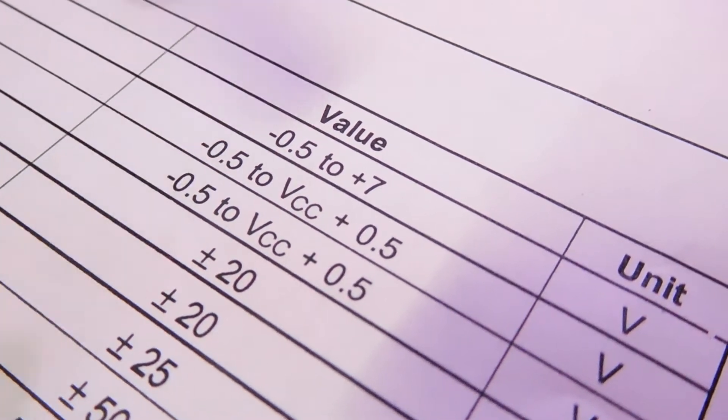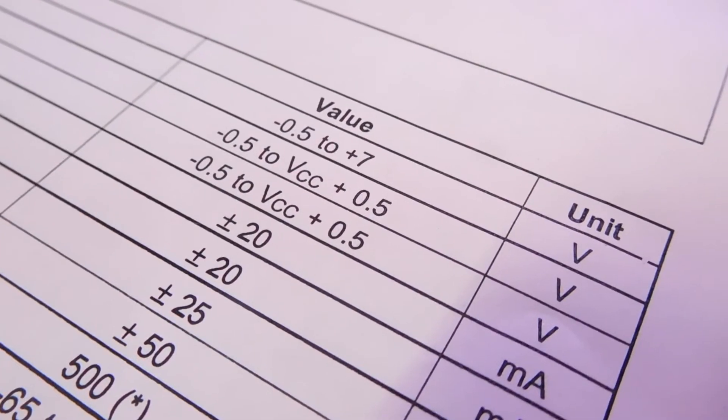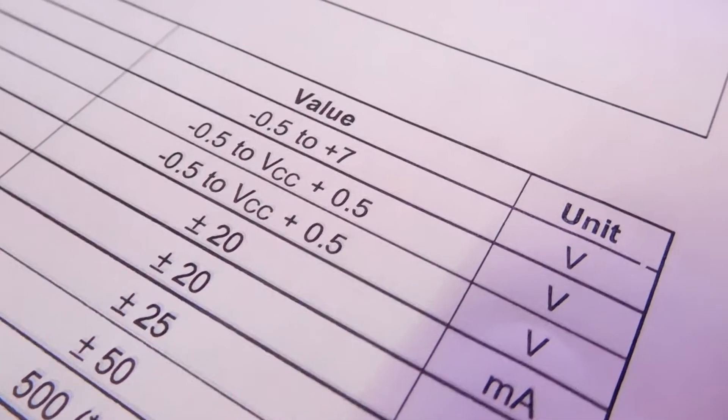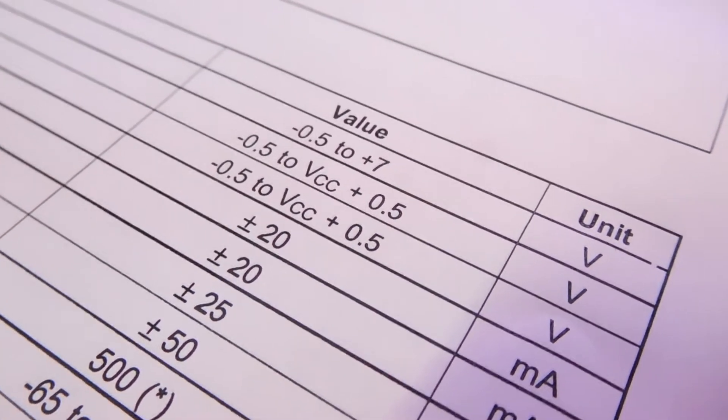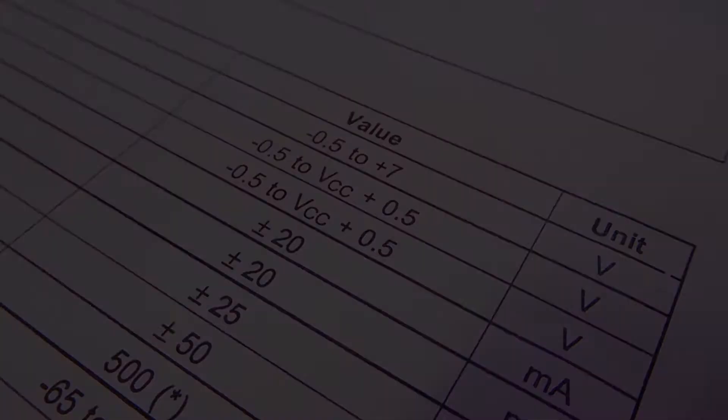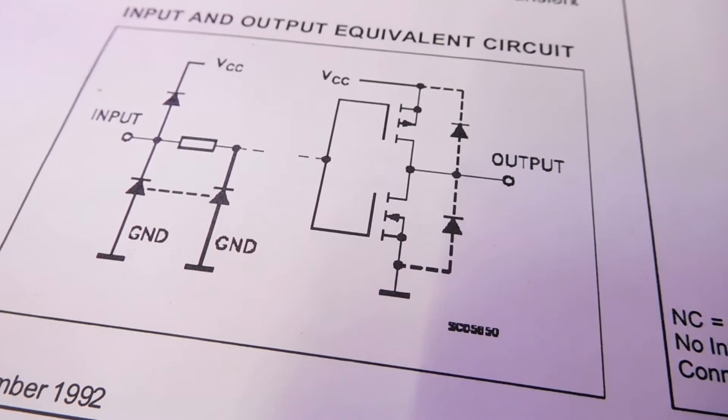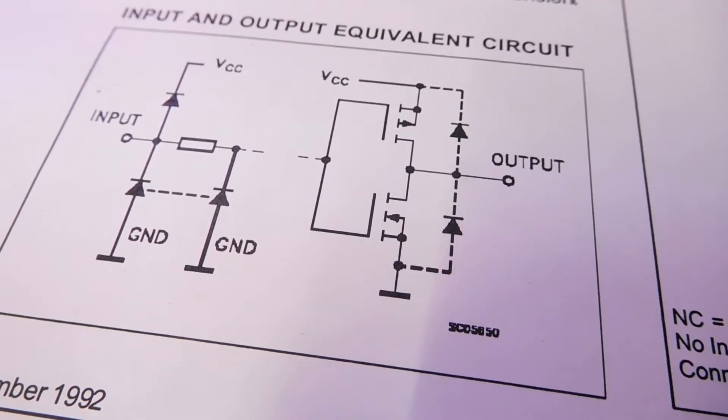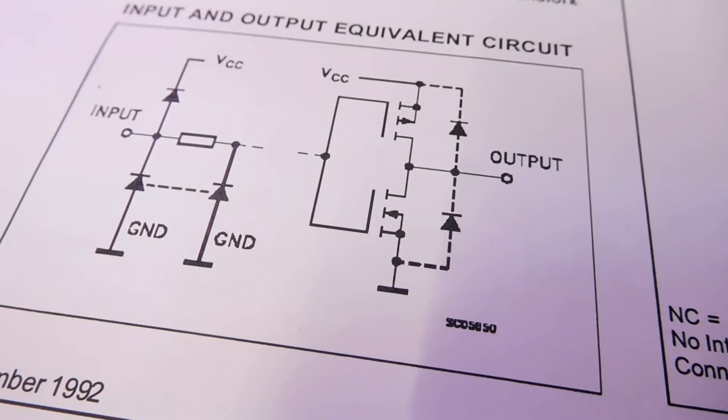For making the input high, we can use anywhere between 0.5 to 5 volts. For making the input low, however, we must connect the input to ground or 0 volts. We can also find the electrical diagram of the gate, which consists of many electrical components that are responsible for inverting the input signal.